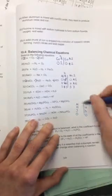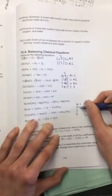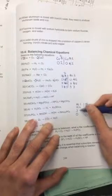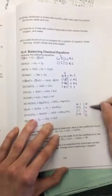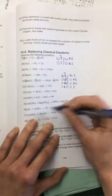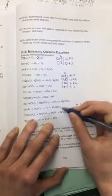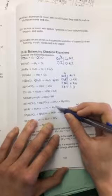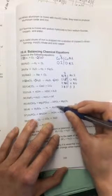So on the reactant side, I have one aluminum, two hydrogens, one sulfur, and four oxygens. Over here, I have two aluminums, because there's a two there, two hydrogens. Now, there's one sulfur right here, but see how there's a three outside the parentheses?